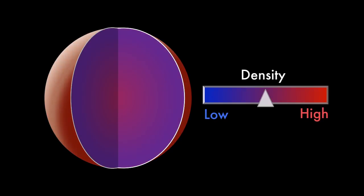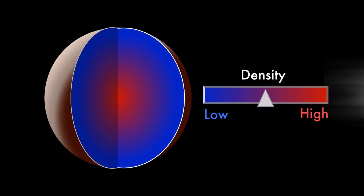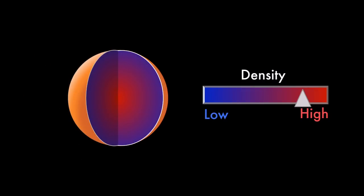When planets form, the lighter materials rise, and denser ones sink to the core. Remove the outer, lighter layers, and you're left with a denser planet once what's left cools off.